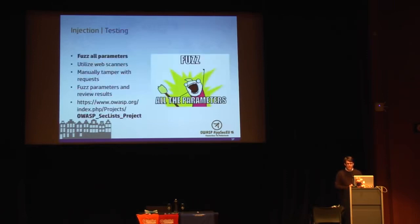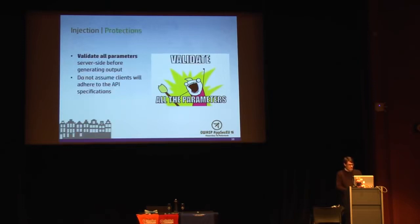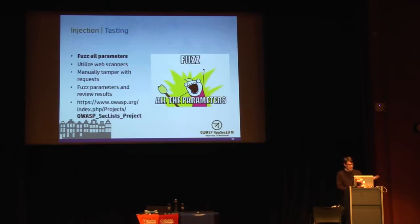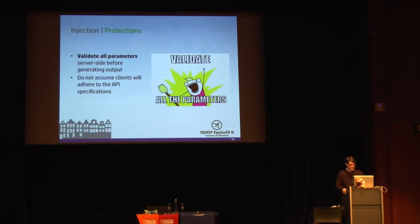For testing injection: the best approach is to fuzz all parameters. We have automated web utilities that help with fuzzing — Burp, ZAP, and fuzzing techniques. Manually tamper with requests, figure out what parameters might be interesting, and use OWASP project resources to enumerate through all types of possibilities. For protection: validate all parameters server-side. Don't assume that clients are going to adhere to your API specifications or use your API the way it's intended to be used.